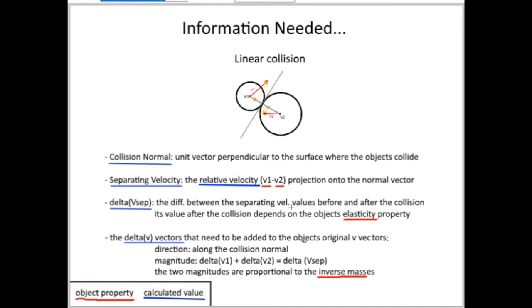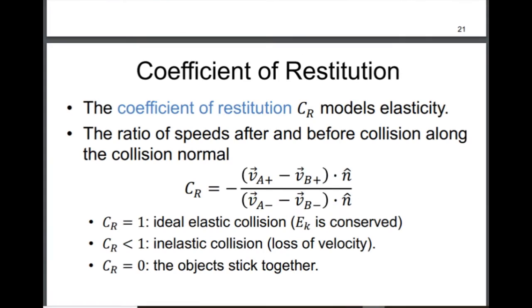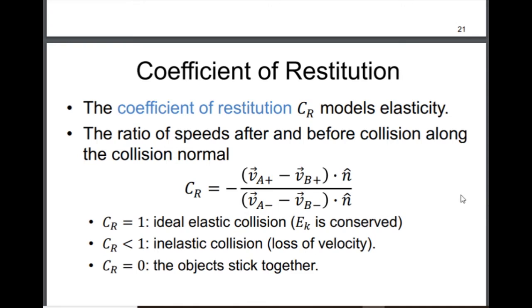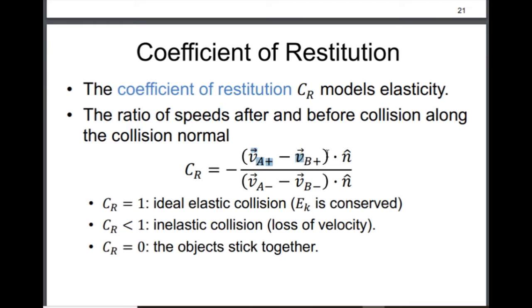That's how I can calculate the delta V for the two objects that are colliding. This is a slide that I'm going to follow through for the rotational collision — I will put a link in the description for this slide. I'm starting with the linear part here as well. What I see here is the ratio between the relative velocity along the normal vector, and the result will be the coefficient of restitution.